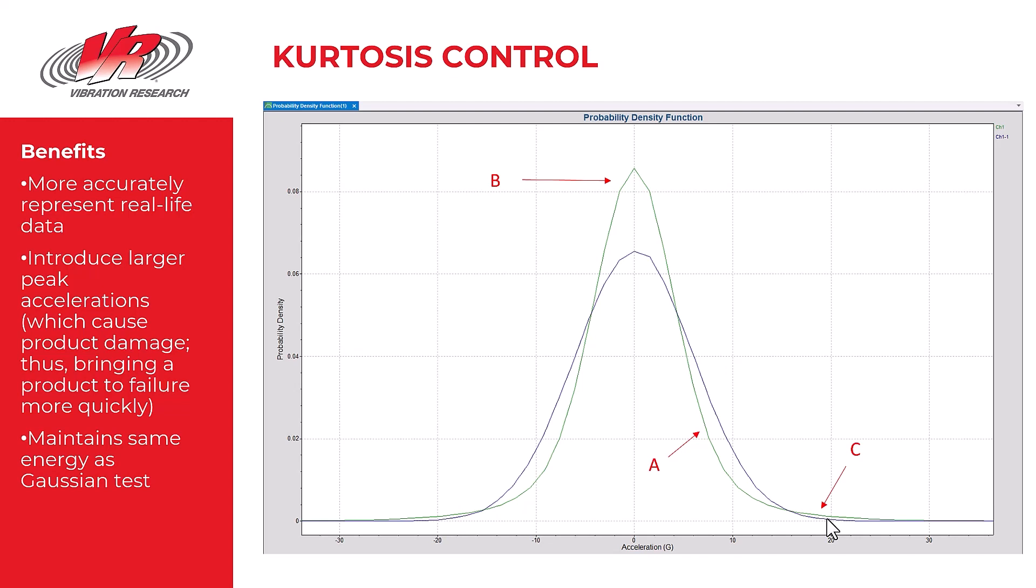So understanding kurtosis, that statistical concept, is very important to understanding random vibration testing. And thereby you can more accurately test your product or you could test your product more quickly without adding more energy to the test.